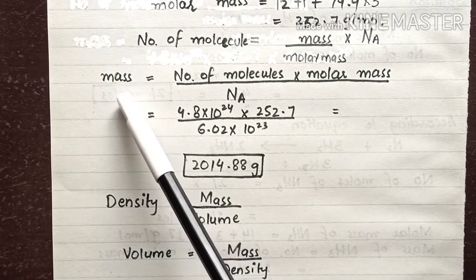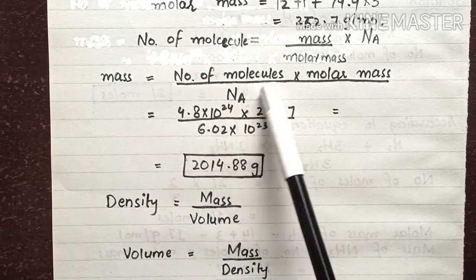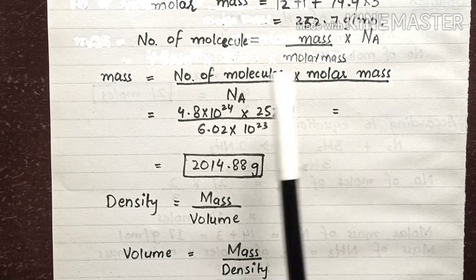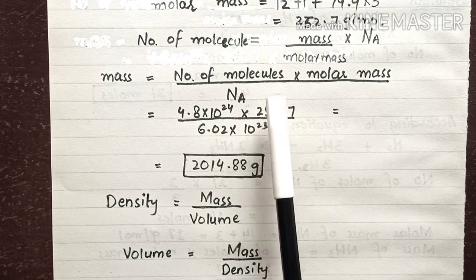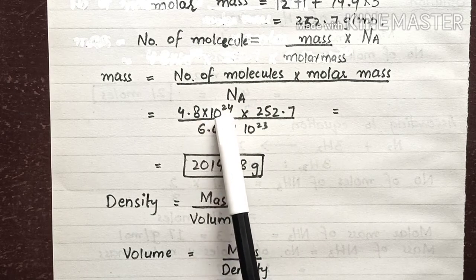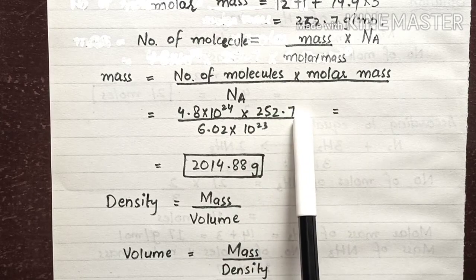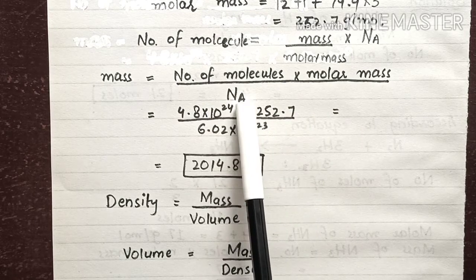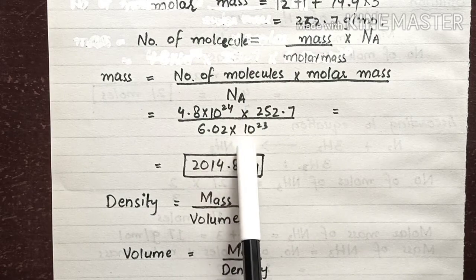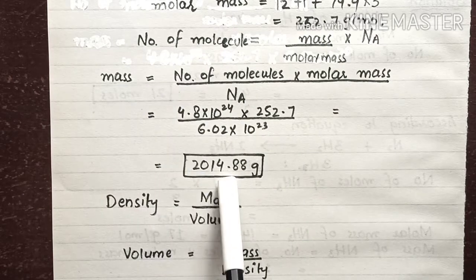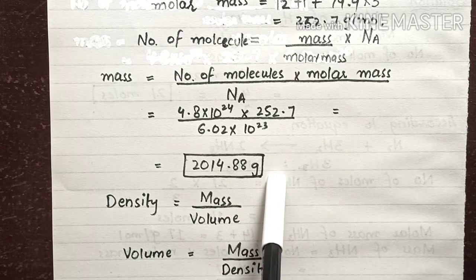The mass equals number of molecules × molar mass divided by Avogadro's number. The number of molecules is 4.8 × 10²⁴, molar mass is 252.7 grams per mole, and Avogadro's number is 6.02 × 10²³. Using a calculator, the mass comes out to be 2014.88 grams.